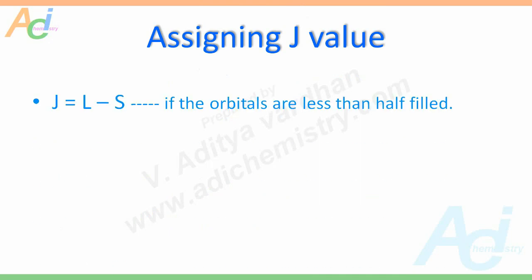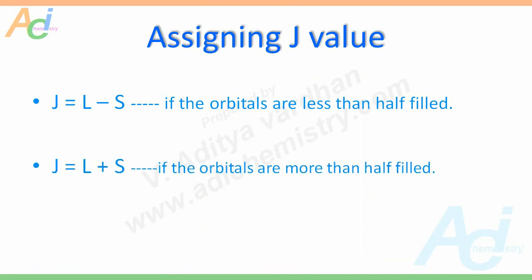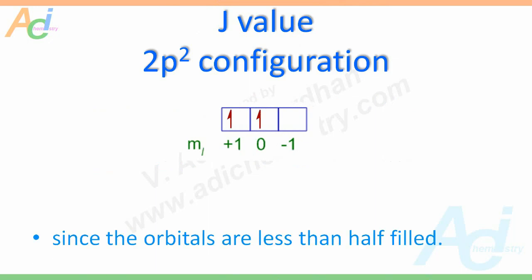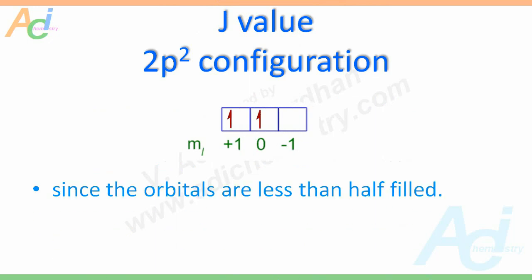Finally, we have to assign the J value. J may equal L minus S if the orbitals are less than half-filled, L plus S if the orbitals are more than half-filled, or J equals S if the orbitals are exactly half-filled. For example, in the case of 2p² configuration, since the orbitals are less than half-filled, J equals L minus S, that is 1 minus 1 equals 0.